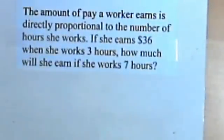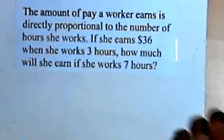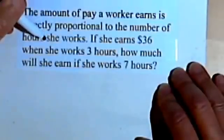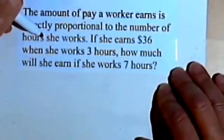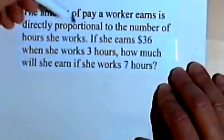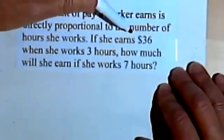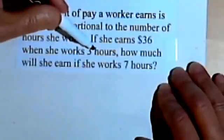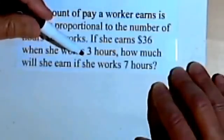Here's another problem. The amount of pay a worker earns is directly proportional to the number of hours she works. So if you think about this, this makes sense. If she earns $36 when she works 3 hours, how much will she earn if she works 7 hours?